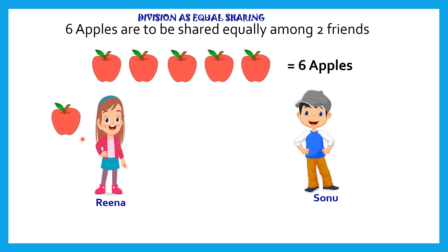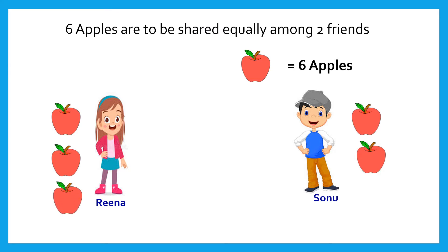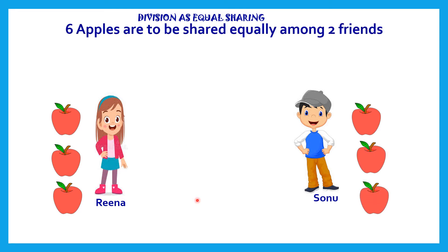The first apple goes to Rina. The second apple goes to Sonu. The third apple goes to Rina again — we are sharing equally, giving one apple to each person. The fourth apple goes to Sonu. The fifth apple goes to Rina. The remaining sixth apple goes to Sonu. Rina got three apples and Sonu got three apples.